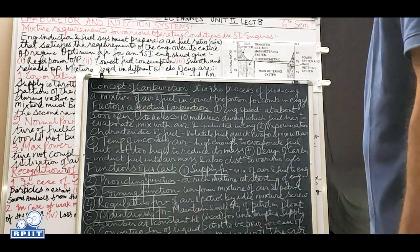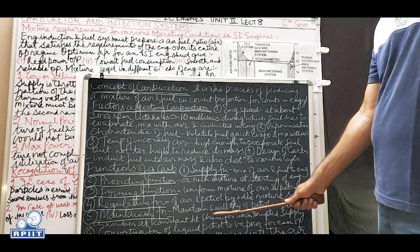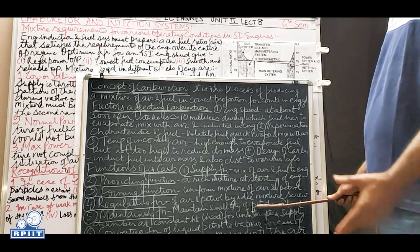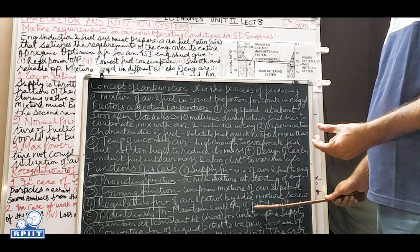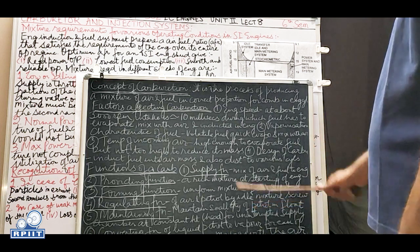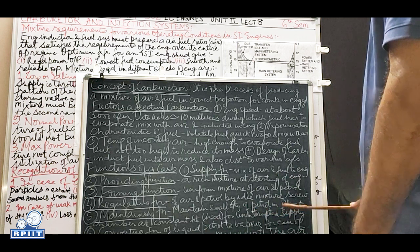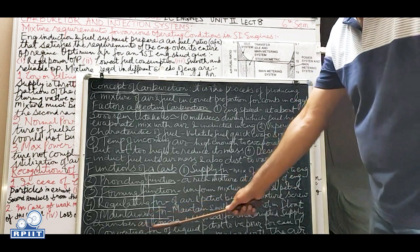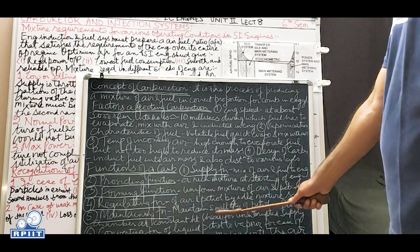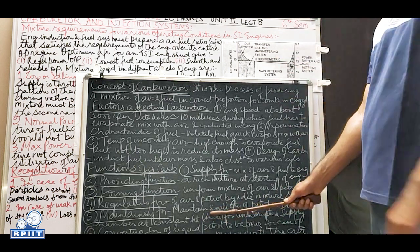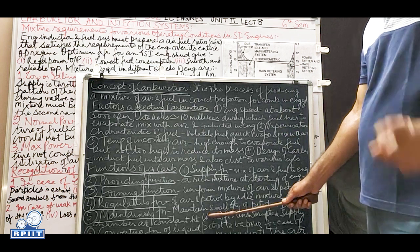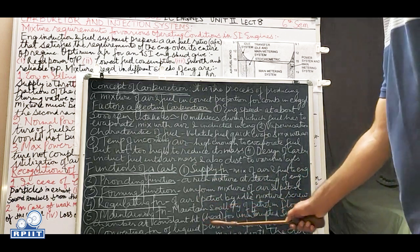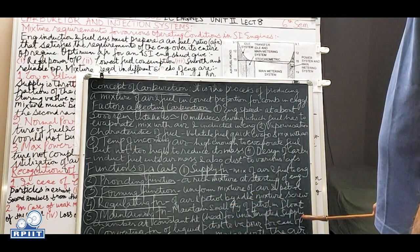Fifth: maintaining function - maintaining a small quantity of petrol in the float chamber so that petrol is always readily available to be supplied to the carburetor venturi. This petrol is maintained at a constant height or pressure head, approximately 1.5 mm from the discharge jet, for uninterrupted supply.